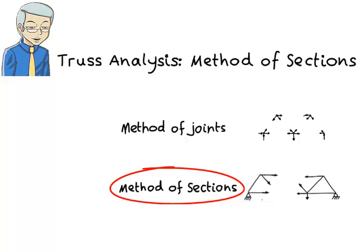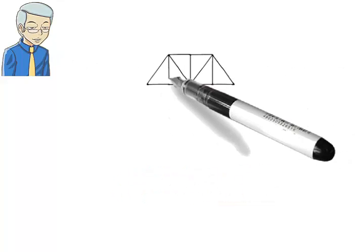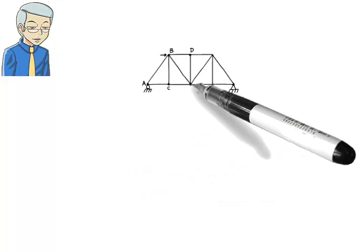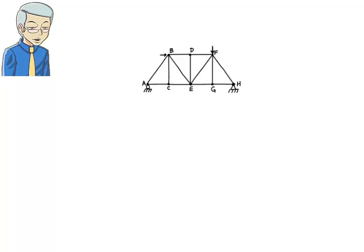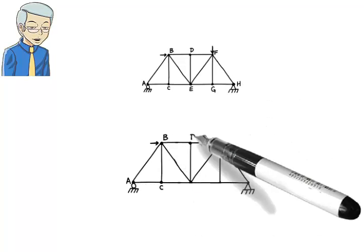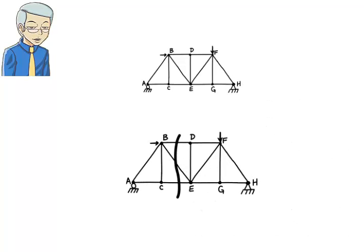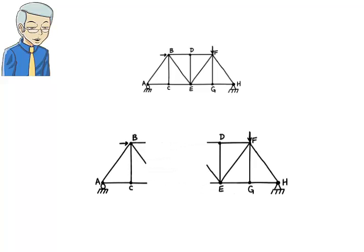This method is based on the principle that when a structure is in the state of equilibrium, every substructure within it must also be in equilibrium. For example, given that this truss is in the state of equilibrium, if we cut it like so, then the left substructure and the right substructure must both be in equilibrium. Needless to say, such a cut is imaginary, done on paper for the purpose of analysing the truss only.